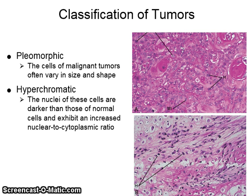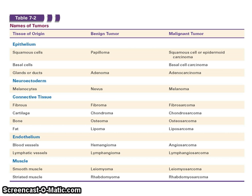Pleomorphic tumors are tumors where the cells often vary in size and shape. Hyperchromatic tumors have nuclei that are darker than those of normal cells and exhibit an increased nuclear to cytoplasmic ratio. See Table 7-2 in your book for more information.